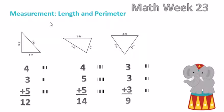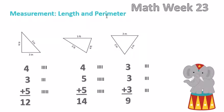Our next topic covers length and perimeter problems using triangles. If you have any shape like a triangle or a square with measurements on each side, those tell you how long each side is. This triangle has sides of five inches, three inches, and four inches. To find the perimeter — the total length around the triangle — you add all the measurements together.